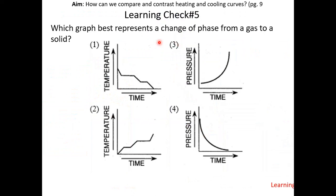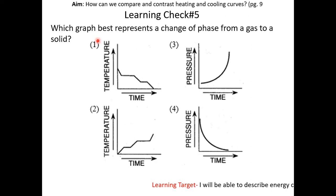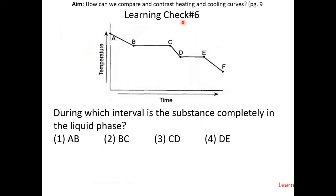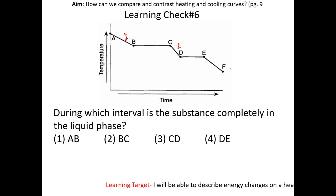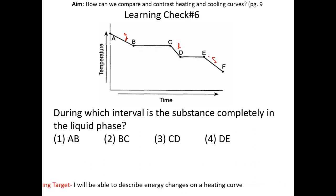Learning check number 5: which graph best represents a change of phase from gas to solid? The graph must be a cooling curve, so the answer is choice 1. Learning check number 6: during which interval is the substance completely in the liquid phase? Label the phases: A to B is gas, C to D is liquid, E to F is solid. During phase changes B–C and D–E, you have two phases present. Since C to D has only one phase — liquid — the answer is choice 3.